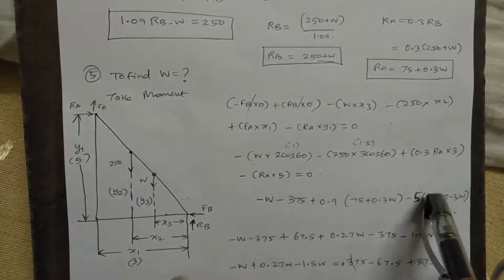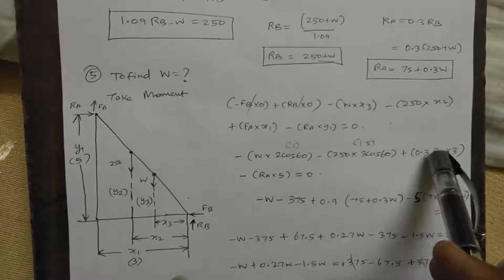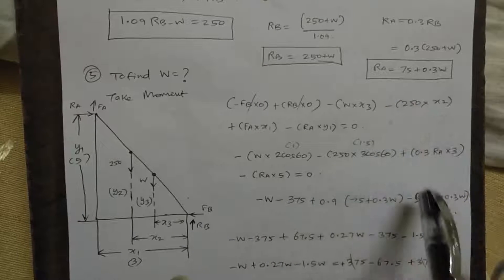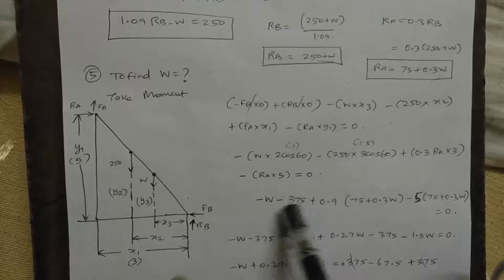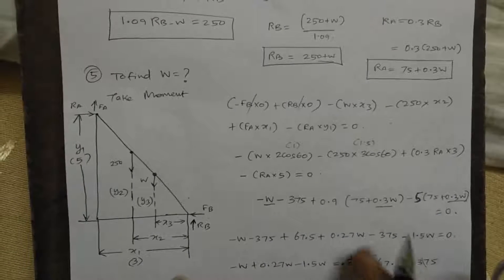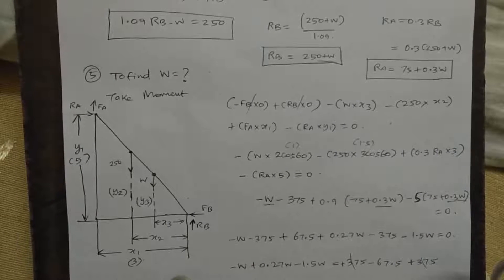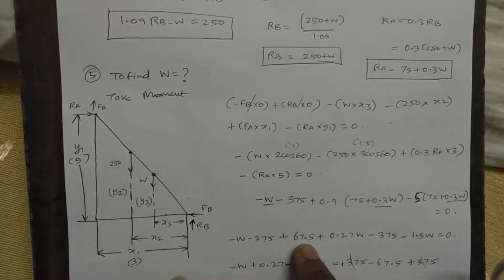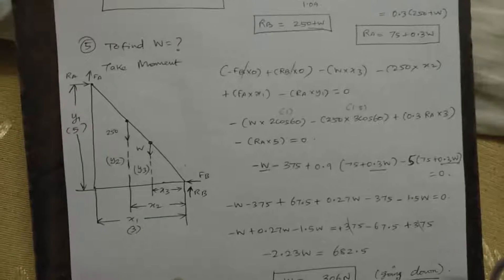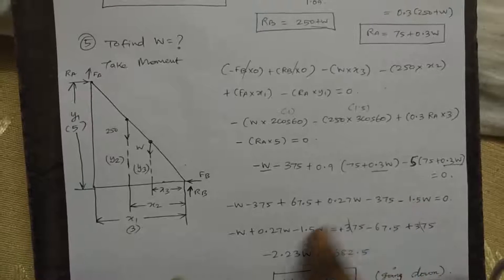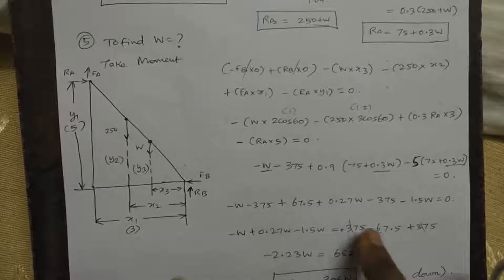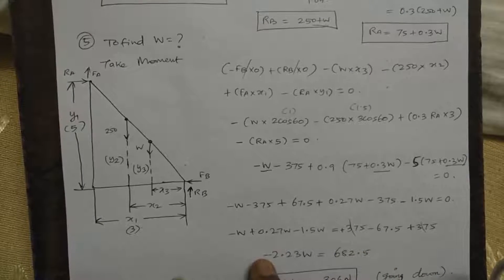W value is 0.3 into 3.9. RA value is 75.3. Then 5 into 75 equals 375. 5 into 0.3 equals 1.5, which equals 0. Solving: minus W plus 0.27 minus 1.5 equal to A. So minus 2.3W in the equation gives approximately 682, leading to the final answer.